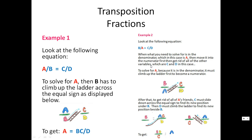Then get rid of all of the other variables — c and d in this case. To solve for a, because it is in the denominator, it must climb up the ladder first to become a numerator. If the variable you're trying to solve for is in the denominator, your first course of action is to move it into the numerator area. We're going to move a from bottom to top. Since it's in the denominator, it has to climb a ladder across the equal sign up to c. The only motions that can happen with fractions — when you have no additions — is diagonal: either going up and across, or down and across.